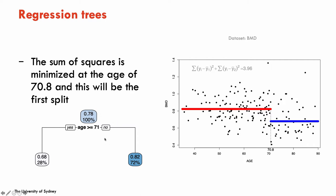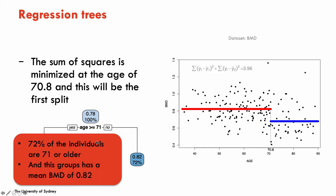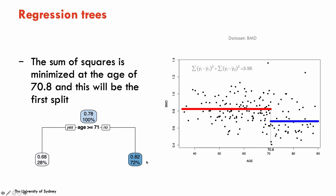In the tree, I have represented initially 100% of the sample. 72% of individuals are below 71 years old and 28% are above 71 years old; the other value gives the average bone mineral density. For younger individuals, BMD is 0.82; for older individuals, it's 0.78.